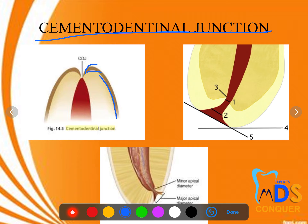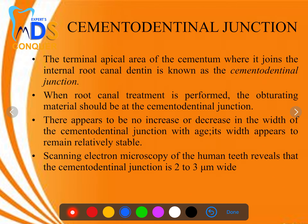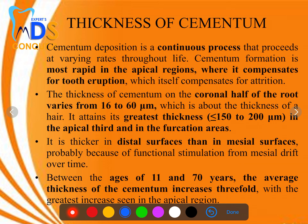The cemento-dentinal junction is where cementum and dentin meet. At this junction, you have the minor apical diameter and the major apical diameter — terms commonly seen in endodontic textbooks. In root canal treatment, the obturation material should terminate at the cemento-dentinal junction and should not extend beyond it.